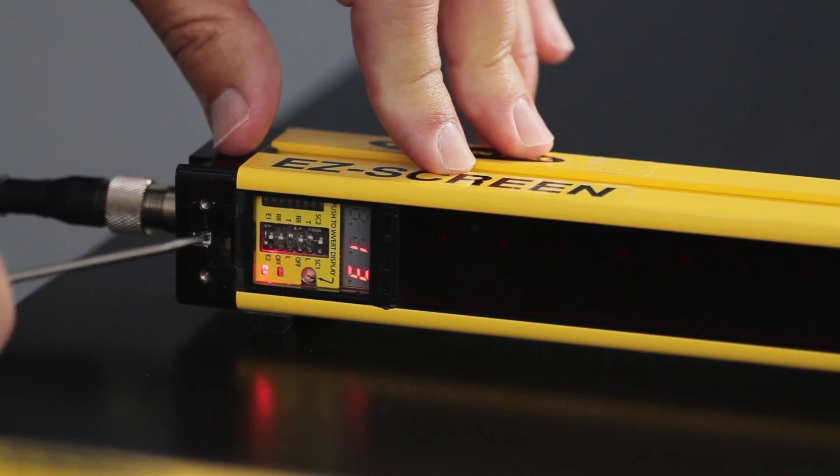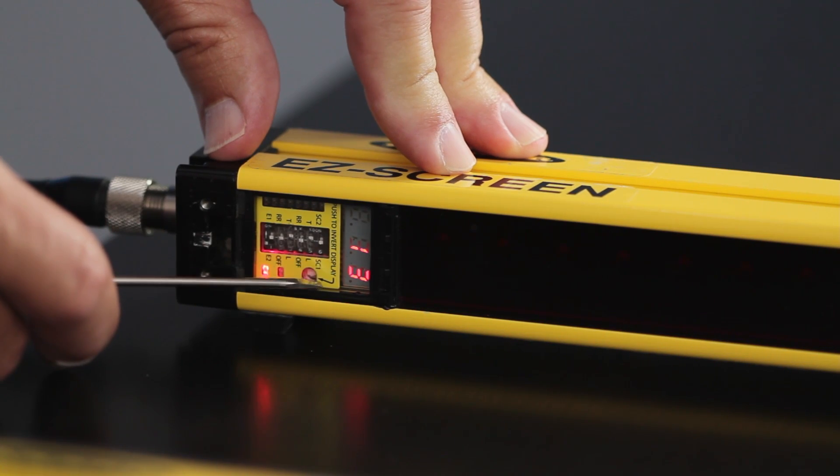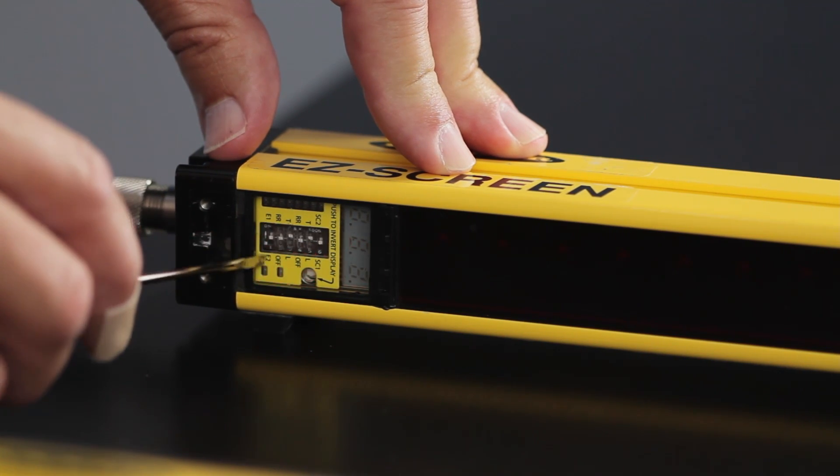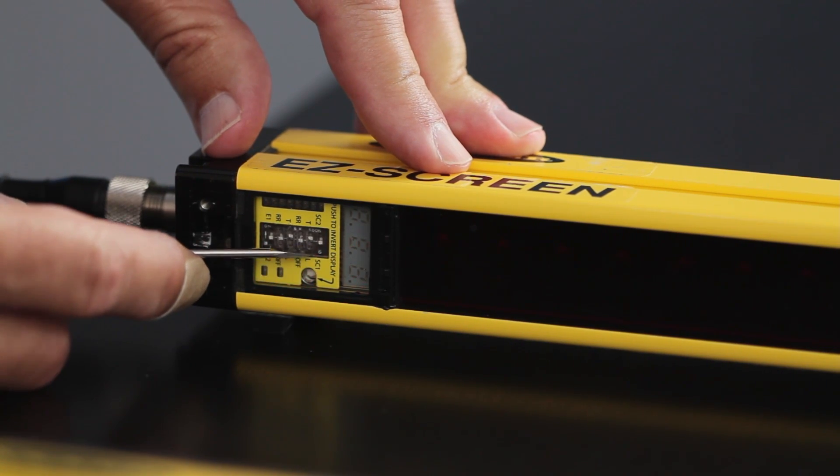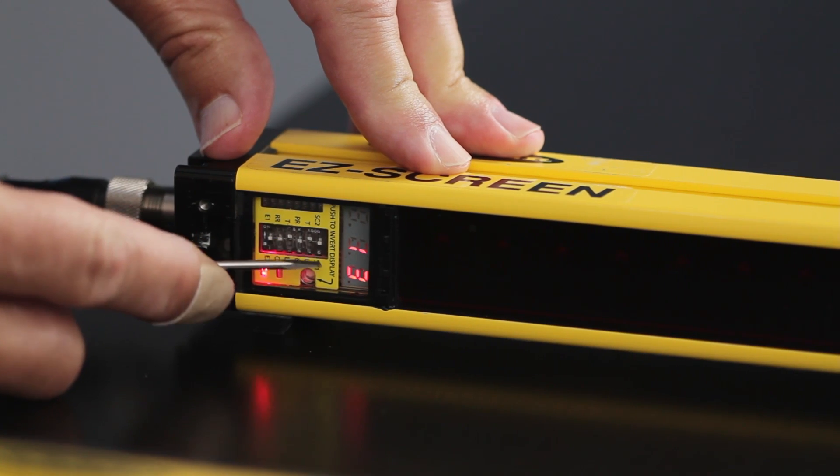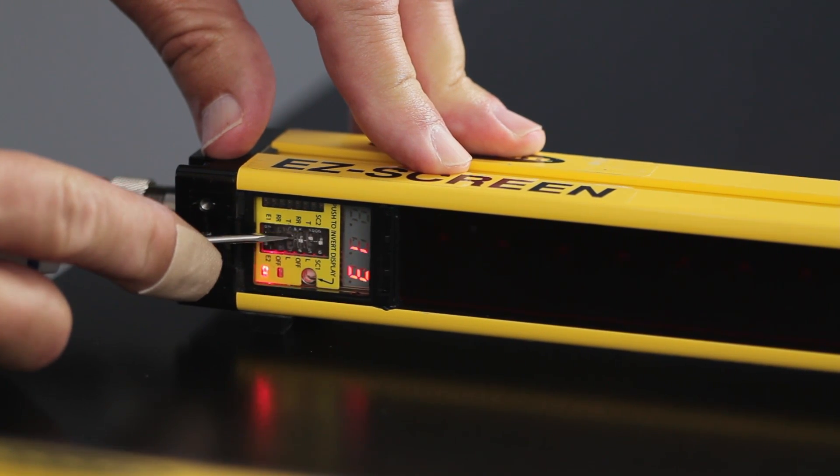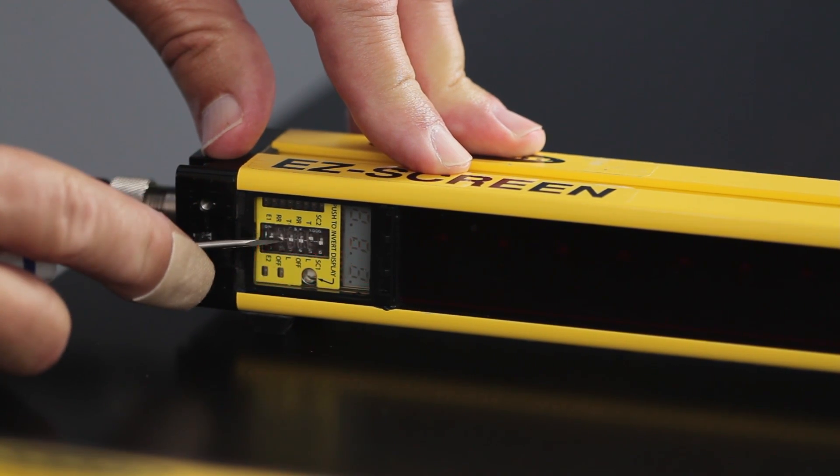Set the dip switches for the following arrangement leaving the first and the last dip switches alone. Dip switch needs to be to the left, to the right, to the right, and to the left.